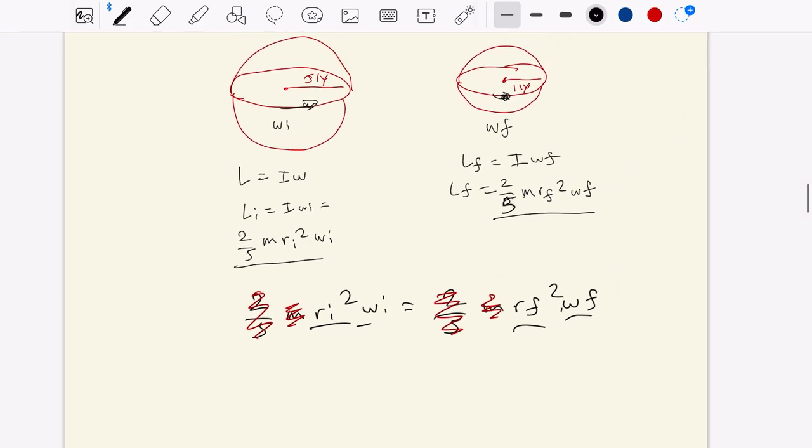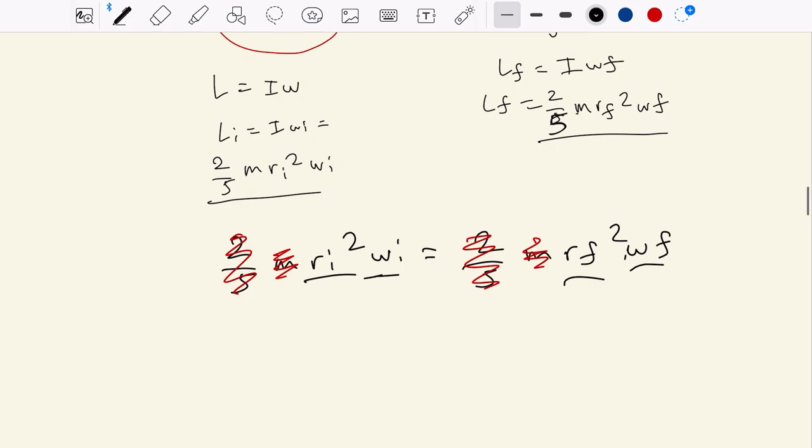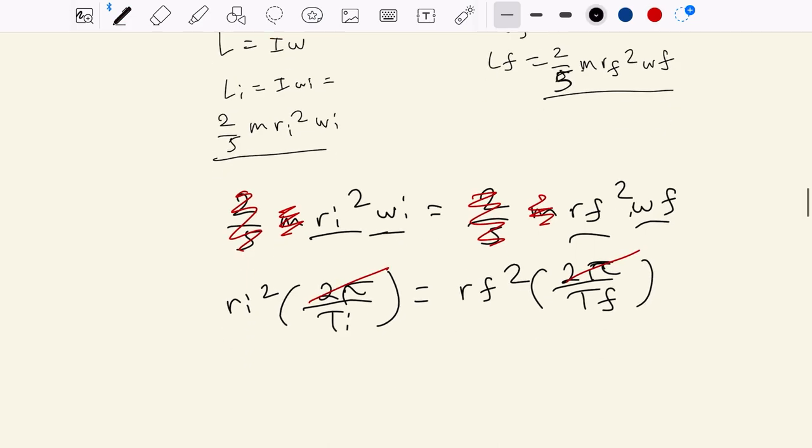So we want to set these two quantities equal to each other to be able to solve further. We have 2 over 5 mri squared wi equals 2 over 5 mrf squared wf. Immediately, we see that these coefficients go away, 2 over 5, and then the mass doesn't change in this problem, that interstellar cloud doesn't have any mass disappearing. So we get this really simple and quite beautiful relationship, that ri squared wi equals rf squared wf.